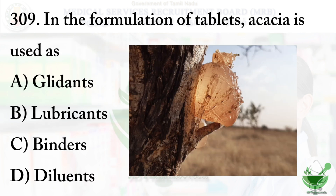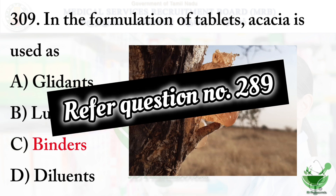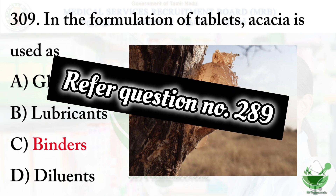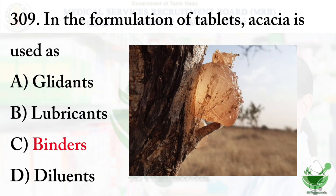Question number 309: In formulation of tablets, acacia is used as? Option A: glidants, Option B: lubricants, Option C: binders, Option D: diluents. The correct answer is Option C, binders. This question was already discussed in question number 289 — please refer to that for a detailed explanation.